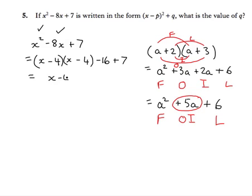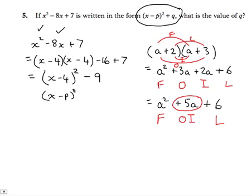We've got an x minus 4 all squared. Minus 16 plus 7 is minus 9. And if we compare that with this, x minus p all squared plus q. The question says, what is the value of q? q is minus 9. q is equal to minus 9.